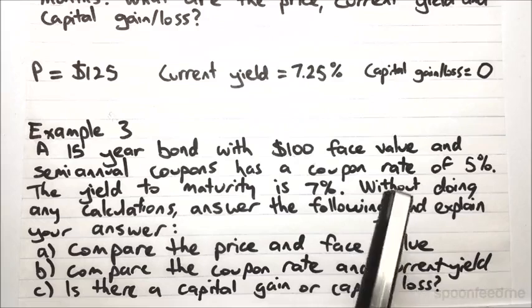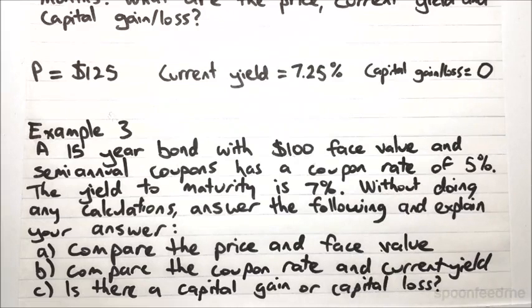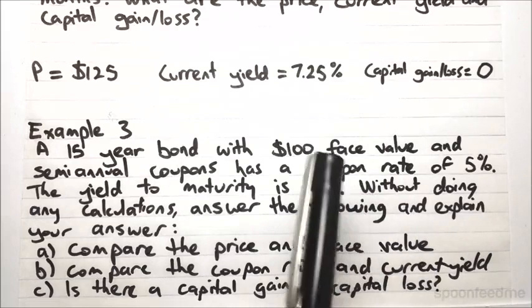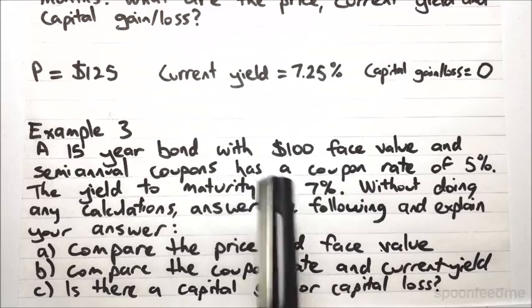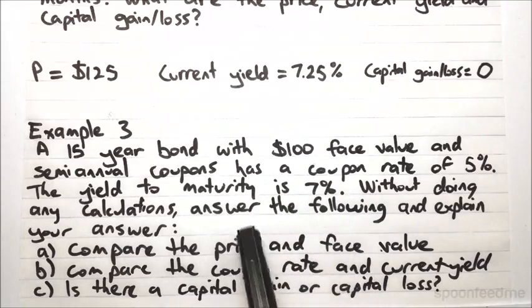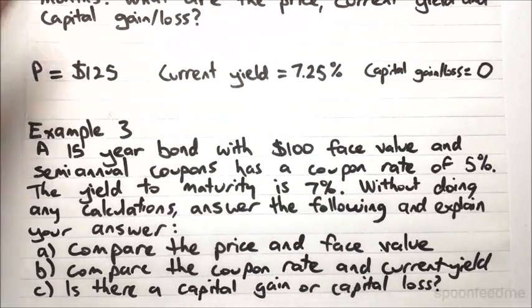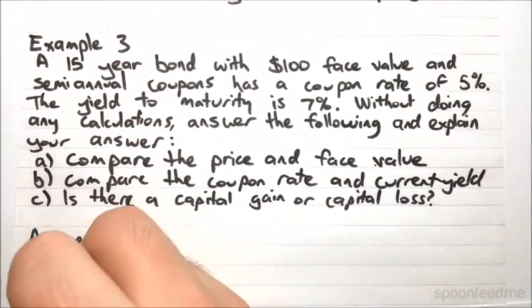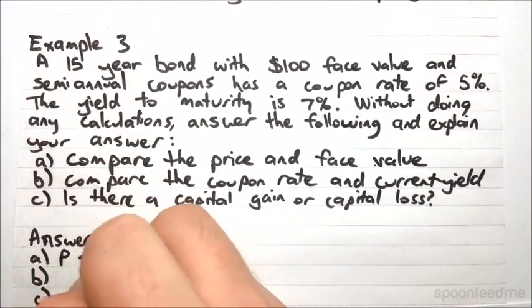That is, the coupon rate and the yield to maturity. Now, we see that the coupon rate is less than the yield to maturity, and what that tells us is that the price is less than the face value. So, our answer to the first part is price less than face value.